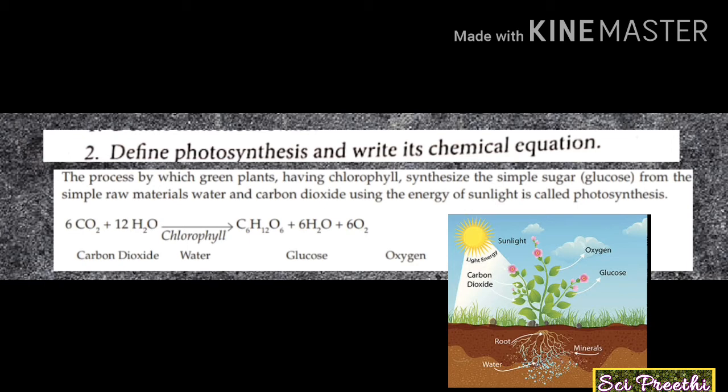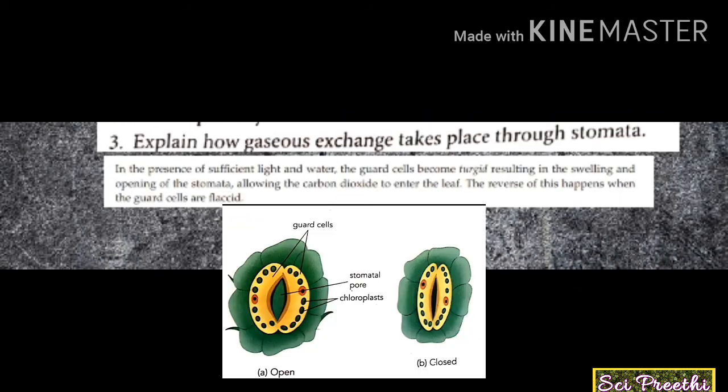Second question: define photosynthesis and write its chemical equation. Photosynthesis is the process by which green plants having chlorophyll synthesize simple sugar (glucose) from water and carbon dioxide using the energy of sunlight. The equation is: carbon dioxide + water → glucose + water + oxygen, in the presence of chlorophyll and sunlight.